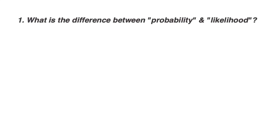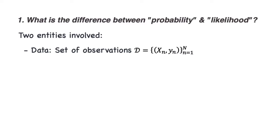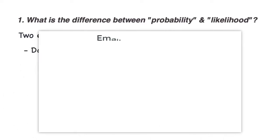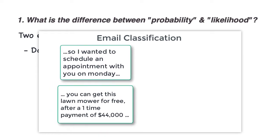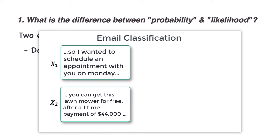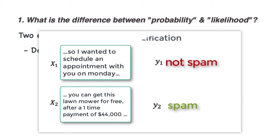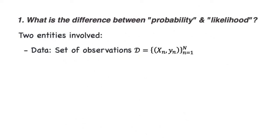What is the difference between probability and likelihood? Two entities involved here. Data, which is a set of observations D. D is a set of n samples with their corresponding labels. For example, in an email classifier to classify a given email as spam or not spam, X is an email and Y can be a binary label, spam or not spam. The second entity is a model. This model performs some task, like the email classifier I just talked about. It's parameterized by some theta.